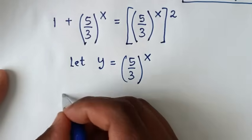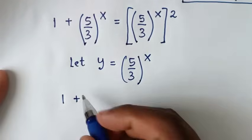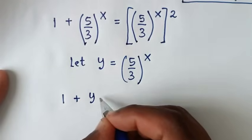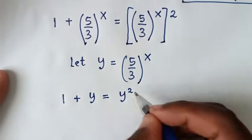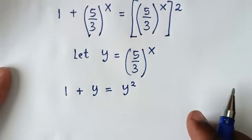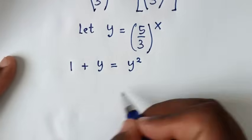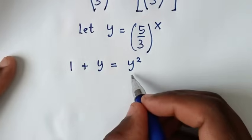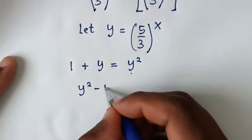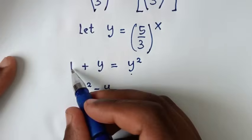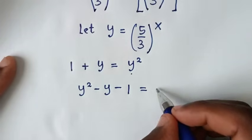Then our equation becomes 1 plus y is equal to y squared. Rearranging, we get y squared minus y minus 1 is equal to 0.